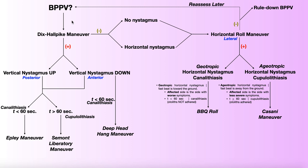If you go through the Dix-Hallpike maneuver and it's negative, and then the horizontal roll maneuver is also negative, you can pretty strongly rule out BPPV as the cause of the patient's dizziness. In some very rare cases a patient might actually have BPPV but both tests happen to be negative, so you'd pursue a different treatment plan and potentially reassess BPPV later. But in general, if you have BPPV, one of these two tests is going to be positive — Dix-Hallpike for the posterior and anterior canals, and horizontal roll for the horizontal or lateral canals.